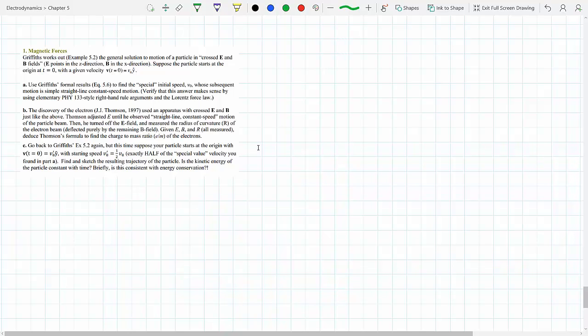Griffith works out example 5 for the general solution to the motion of a particle in crossed E and B fields. That's the example we were looking at last time - E in the z-direction, B in the x direction, the particle starts at the origin with a given velocity v_0 y.